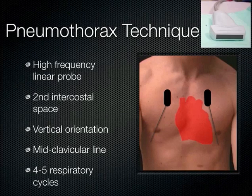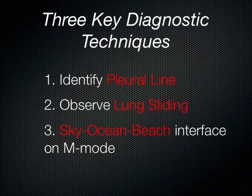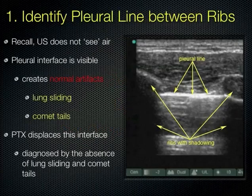There are three big things to look for with pneumothorax: the pleural line, lung sliding, and M-mode assessment through the pleural line over several respiratory cycles. Identify your pleural line — remember you have the ribs, which are hyperechoic at the cortex, with rib shadows behind them. Some call this the bat sign: the cortex of each rib forms the wings, and the pleural line is the body. You're looking for that image: one rib on either side with the pleural line in the middle.